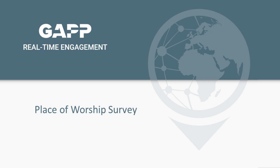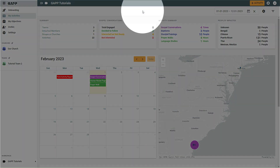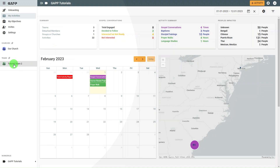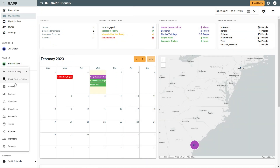Use the Place of Worship Survey to mark places of worship you find around your team. To record a Place of Worship Survey in GAP, select the appropriate team from the side menu and select Activities.